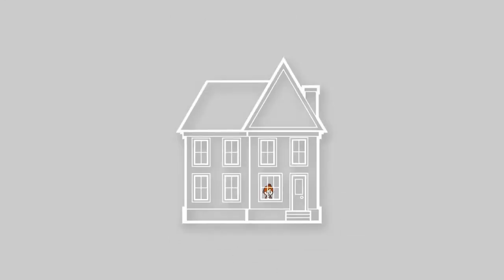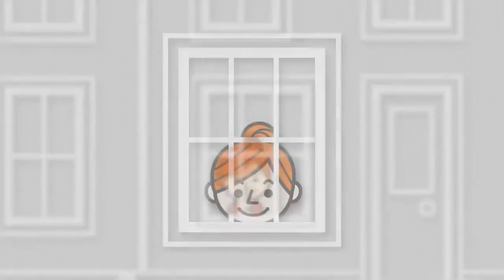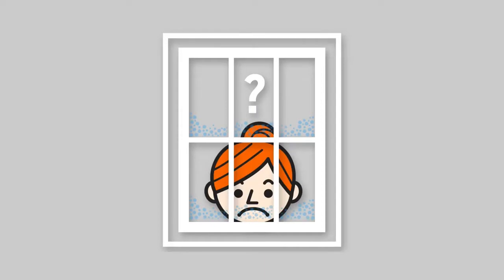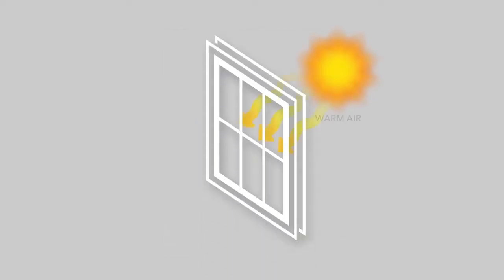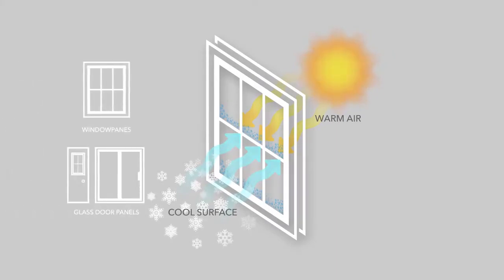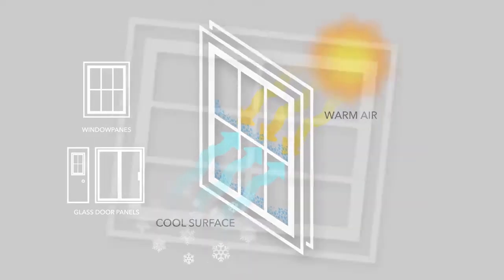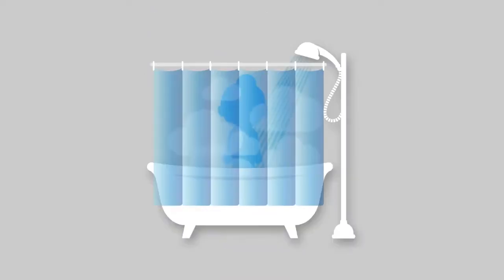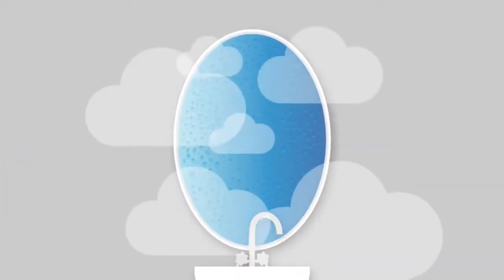Now that you've had your new windows installed, you may have noticed condensation forming on the glass. Not to worry, condensation is a normal occurrence when warm air meets cold surfaces. Condensation forms when warm or humid air comes into contact with cooler surfaces such as window panes or glass door panels. When warm air inside your house comes in contact with a cool window, the water vapor in the air turns to liquid as it cools. That liquid is what you see on your windows. It's the same reason that glasses sweat and bathroom mirrors fog up when you take a hot shower.